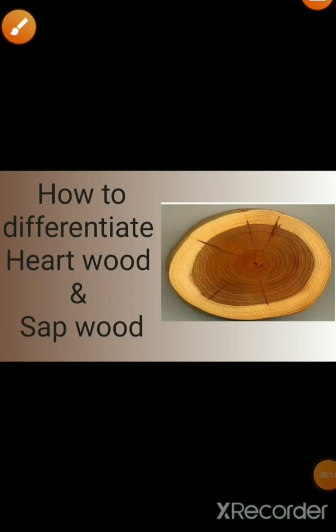Hello students, today I explain a topic related to Class 11, Chapter: Anatomy of a Flowering Plant. The topic name is Heartwood and Sapwood. We will understand where the Heartwood and Sapwood structures come from and where they are present in a plant. These structures are present in the stem of a plant, mainly the old stem of a dicot plant where secondary growth is present.